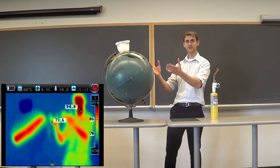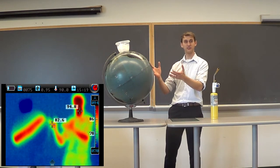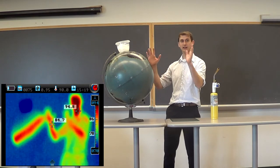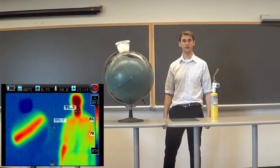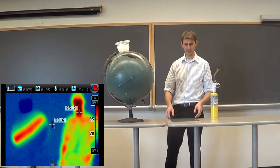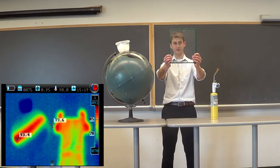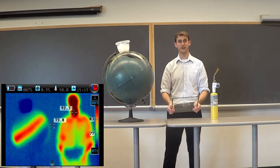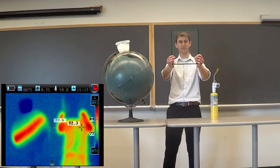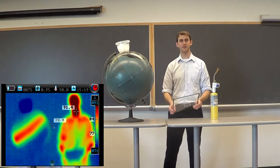And now we can see that invisible light radiating off of our model planet. Now the greenhouse effect gets its name from greenhouses, which are transparent in the visible wavelengths, but opaque or actually reflective in the infrared.